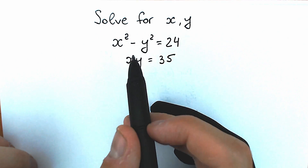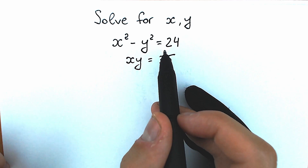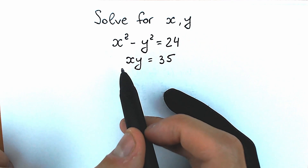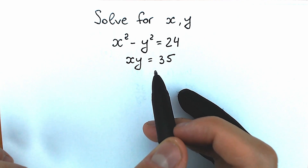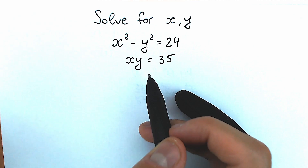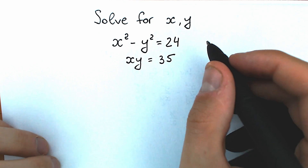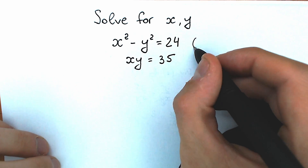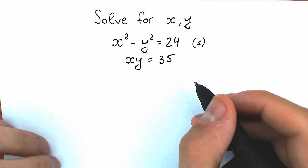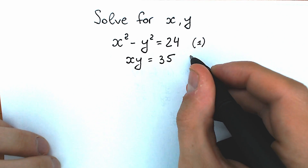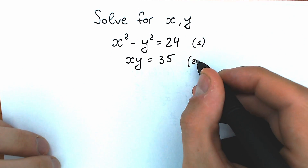So what do we have right here? We have x squared minus y squared — a difference of squares — equal to 24, and we have a product x times y equal to 35. Let's call the first expression our first equation, and xy equals 35 our second equation.